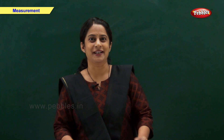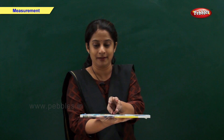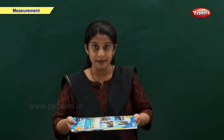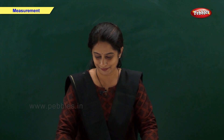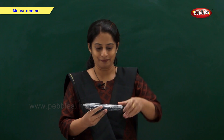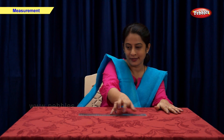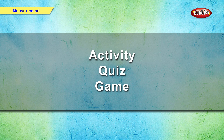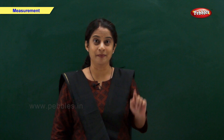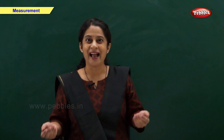Now let us measure some objects. One, two — this book is my two spans long. One — this remote control is my one span long. Now let's measure this table. One, two, three, four — four spans. Now let's measure this ruler. One, two — this ruler is two spans long. Now you have to measure your TV, your bed and your carpet.